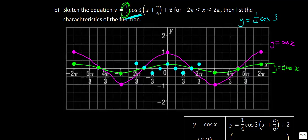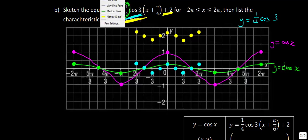Now I need to do our last two transformations. I'm going to move it up two units in yellow. I take all these blue points and move them up two units. Because the peak was at one quarter, going up two units gives two and a quarter. The zero points become nicely two. Following the pattern all the way through, I'll label this y = (1/4)cos(3x) + 2.